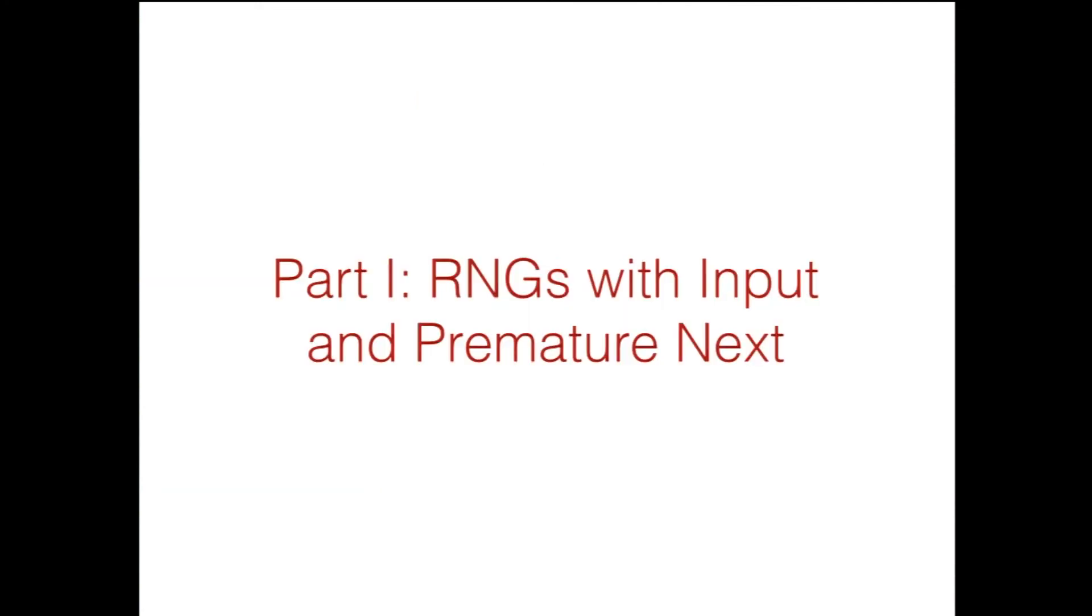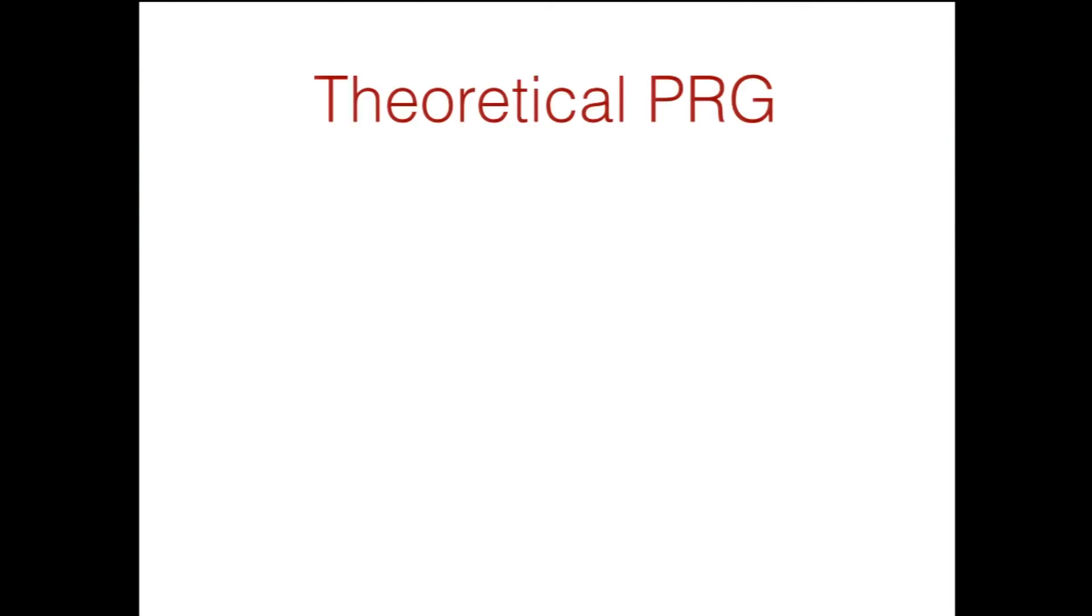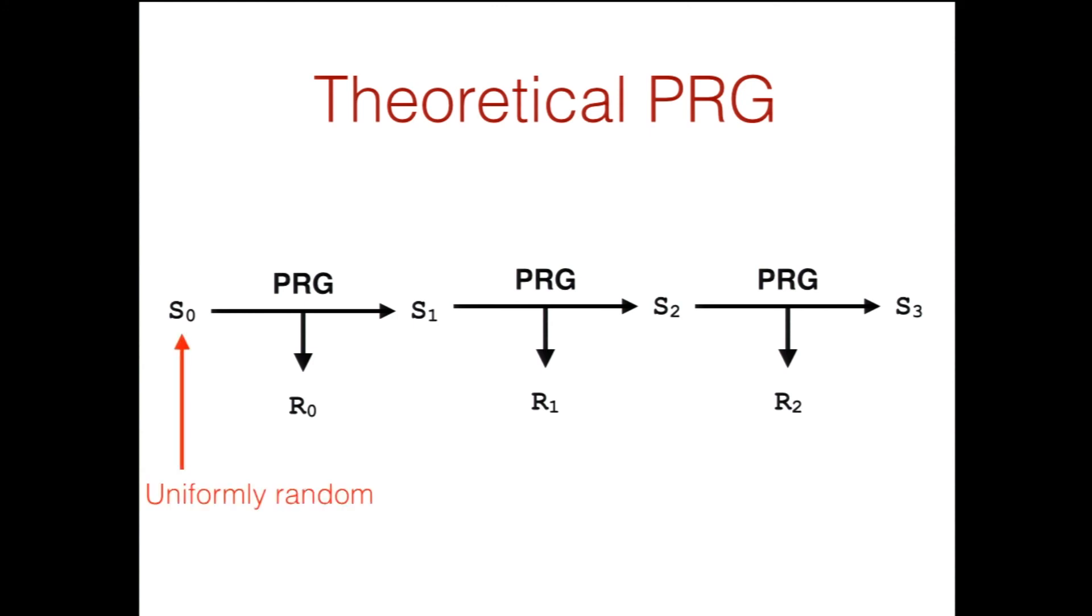Let me tell you what an RNG with input is and what the premature next problem is. A theoretical PRG is the method that cryptographers usually think about when they think about getting randomness. You have some function that's a PRG. It starts with some state S0, and it outputs some new state S1 and some randomness R0. If you want a bunch of randomness, you just run this a bunch of times. The only problem is that you have to start out with uniformly random state, and in practice, uniformly random things are hard to find. So this isn't quite ideal.